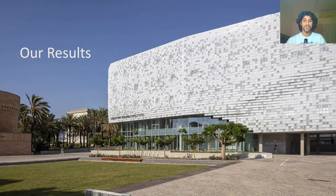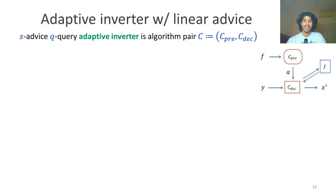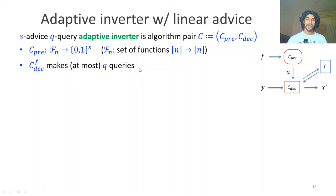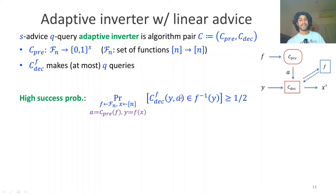Let's review our results in this paper. To start, let's see how we formulate adaptive inversion. An inverter is an algorithm pair: preprocessor and decoder. The preprocessor receives the function and outputs an advice string. Next, the decoder receives the advice string, the element to invert y, and can make at most q queries to f. We say such an algorithm has high success probability if, over a random choice of f and y, it succeeds in at least half of cases.